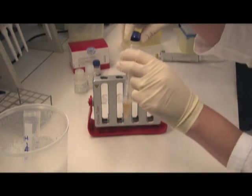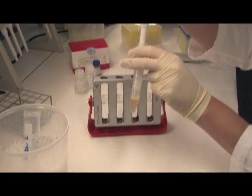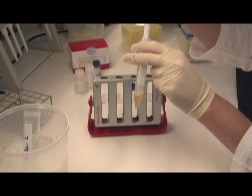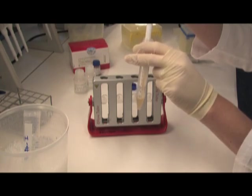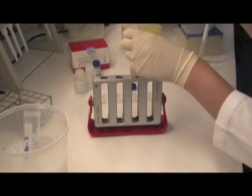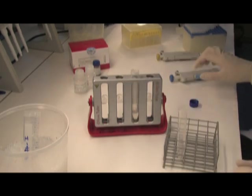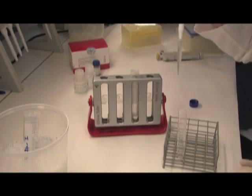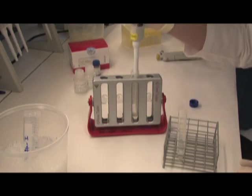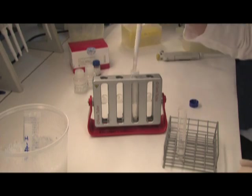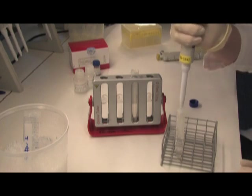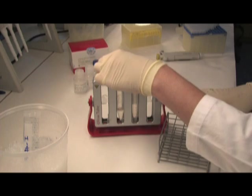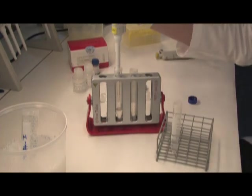Mix the cells by gently pipetting 5 times and place the tube in the magnet for 1 to 5 minutes. Transfer the supernatant containing the bead freed cells to a new tube. Place the tube in the magnet for 1 to 5 minutes to remove all residual beads.